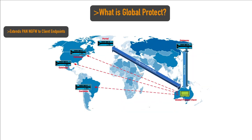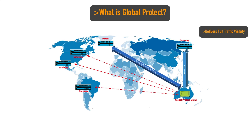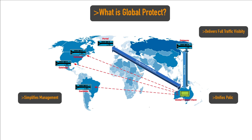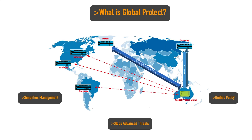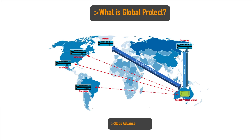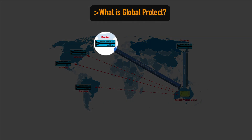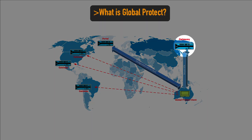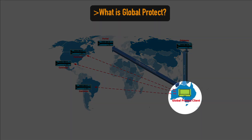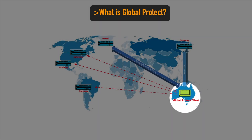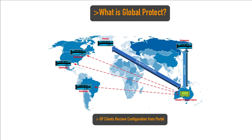So what is GlobalProtect? GlobalProtect extends next-generation firewalls to the client endpoints, which delivers full traffic visibility, simplifies management, unifies policy, and stops advanced threats. There are multiple GlobalProtect components including GlobalProtect portals, GlobalProtect gateways, and GlobalProtect client software. The portal provides management functions for the GlobalProtect infrastructure — clients that communicate with the infrastructure receive configuration from the portal.